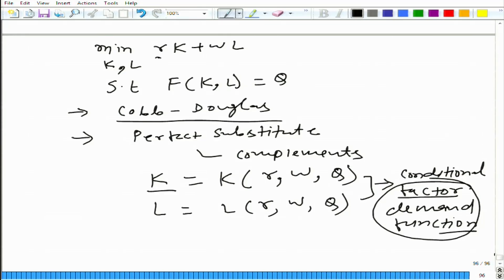Different combinations of capital and labor can be used to produce this Q amount of output, but they choose a particular combination—one that minimizes the cost. That amount of capital depends on the rent, wage, and amount of output. That is why it is called factor demand function.